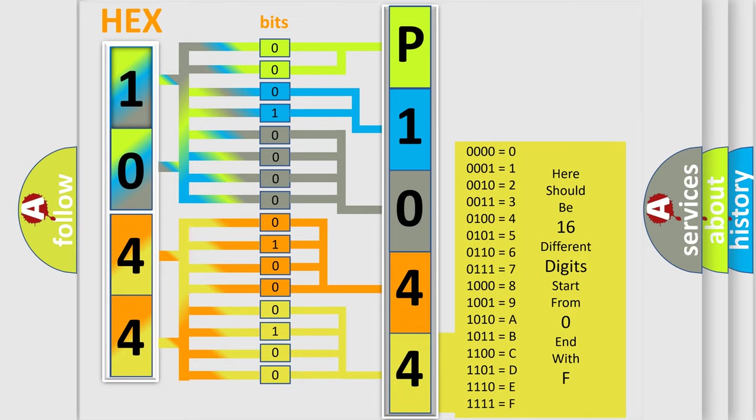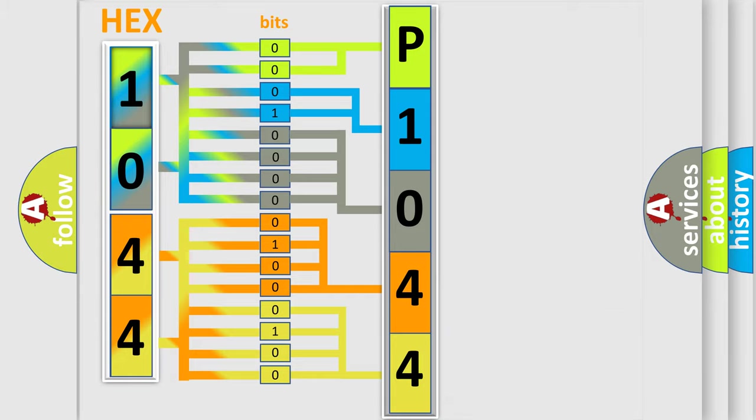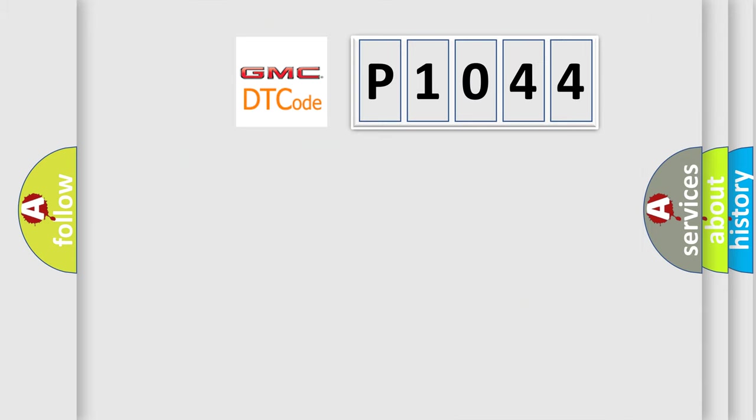We now know in what way the diagnostic tool translates the received information into a more comprehensible format. The number itself does not make sense to us if we cannot assign information about what it actually expresses. So, what does the diagnostic trouble code P1044 interpret specifically for GMC car manufacturers?